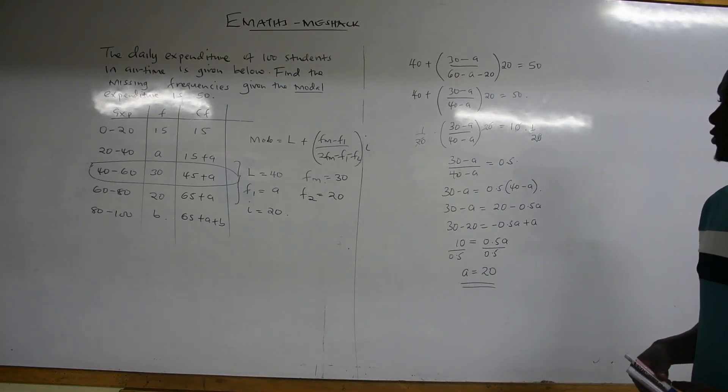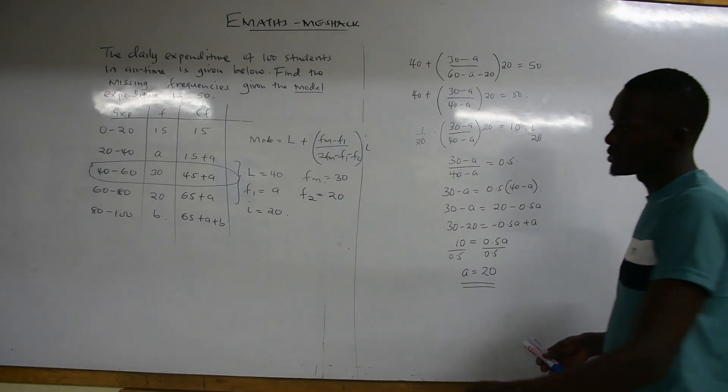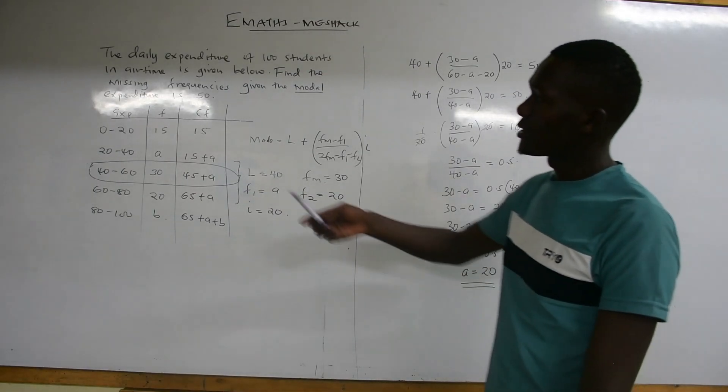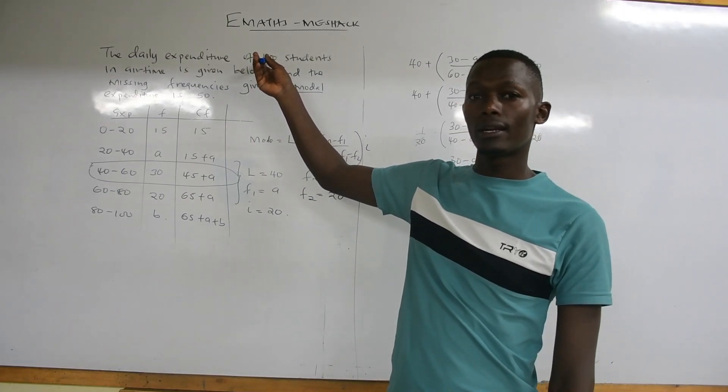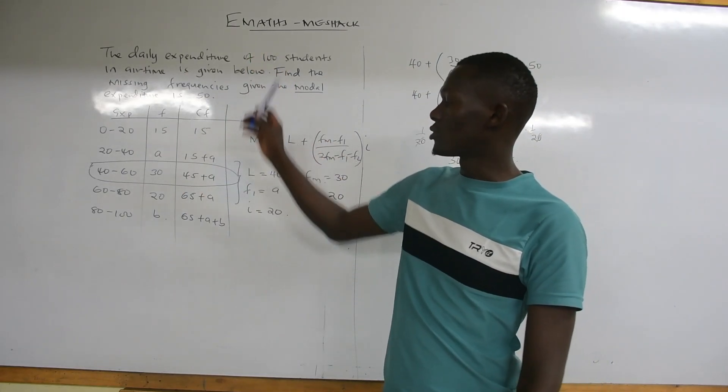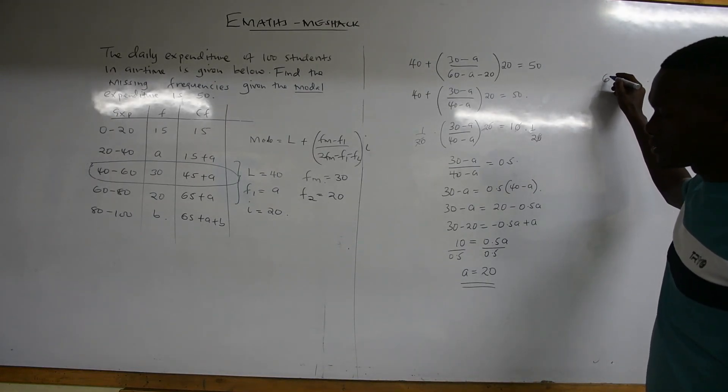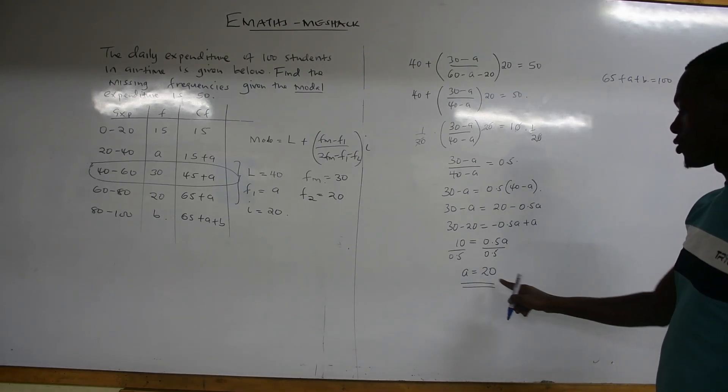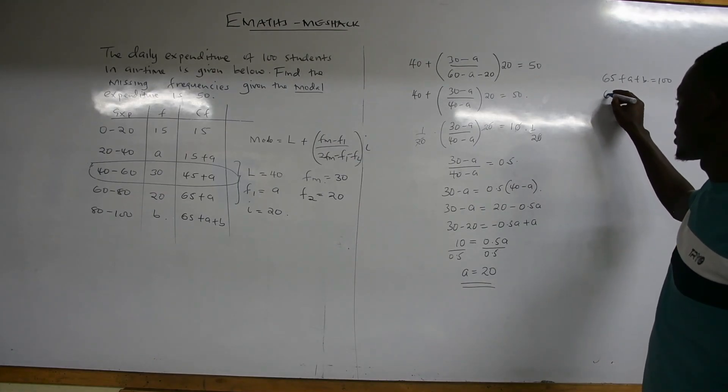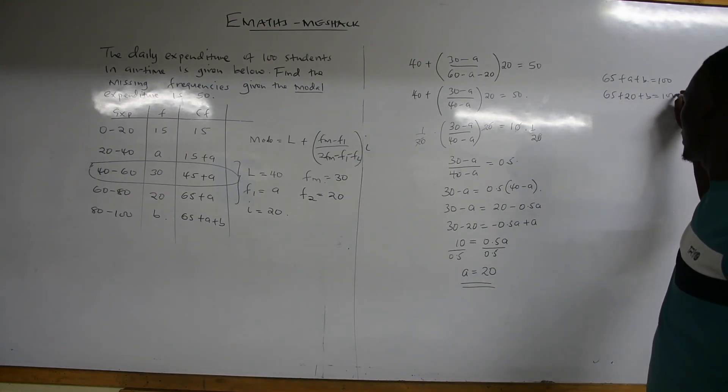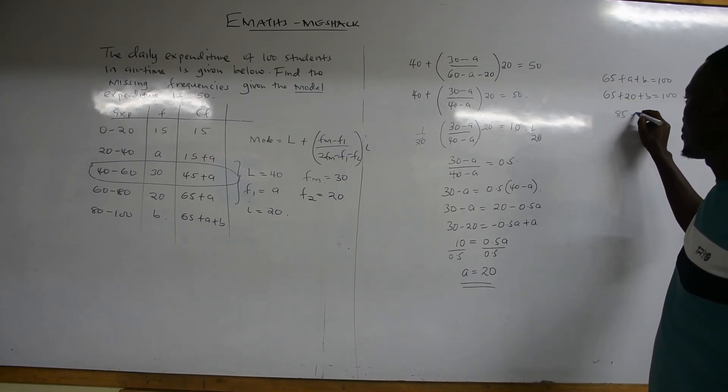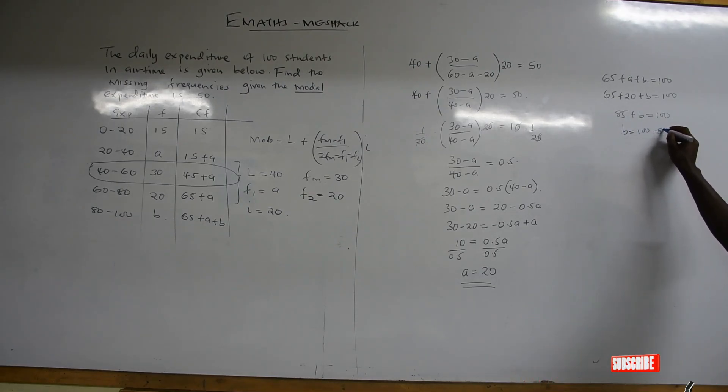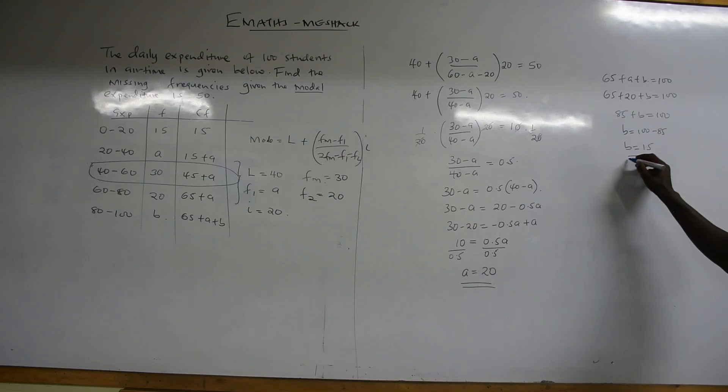We now check how to find the value of B, and B shall be found by the cumulative frequencies. We have been given the daily expenditure of 100 students. Therefore, our cumulative frequency in total should give us 100. So 65 plus A plus B should give you 100. Since A is 20, we have 65 plus 20 plus B equals to 100. So 85 plus B equals 100, and B equals 100 minus 85, which gives us 15.